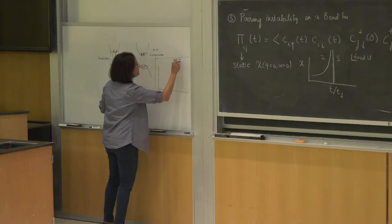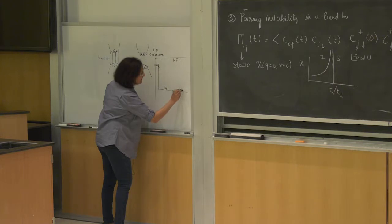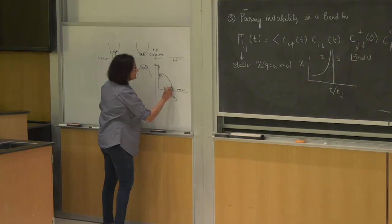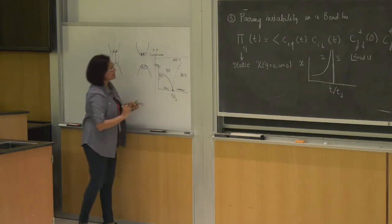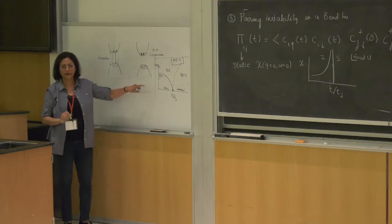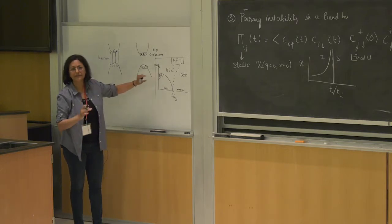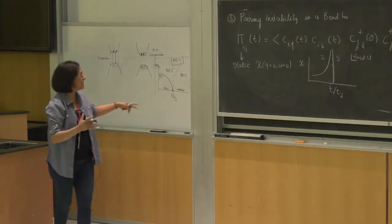So the mean field phase diagram: U over T-perp versus T over T-perp. Here was the Fermi band insulator to metal transition, this turns like this, and there's a small sliver of a Bose insulator, with BCS and BEC crossover. The main thing you notice is that the Bose insulator in mean field theory is very tiny.